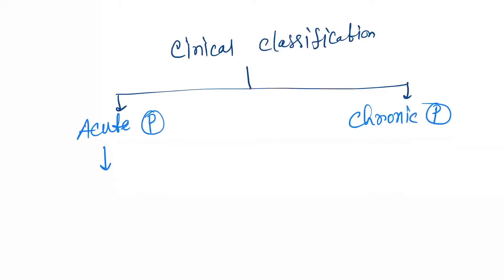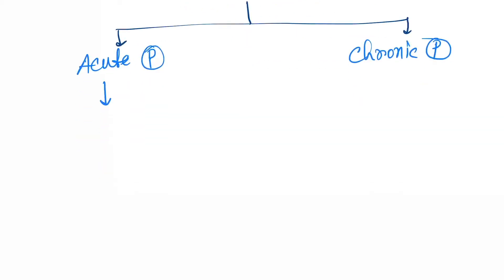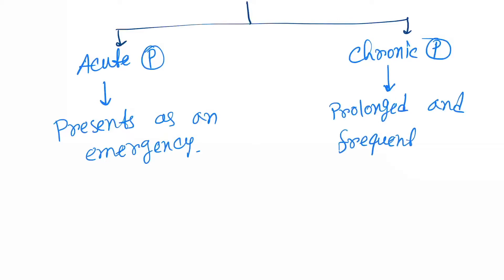In acute pancreatitis, the patient presents as an emergency, whereas in chronic pancreatitis, it is a prolonged and frequently lifelong disorder.